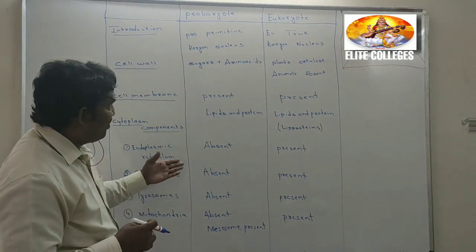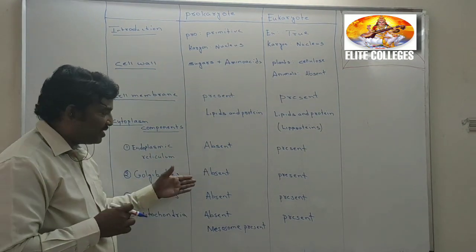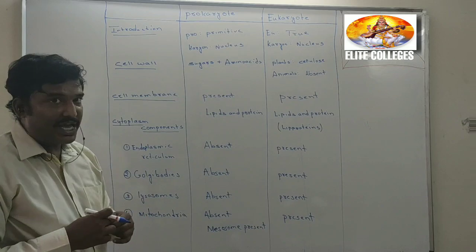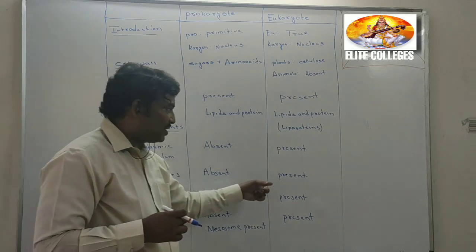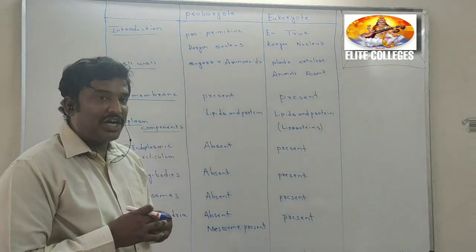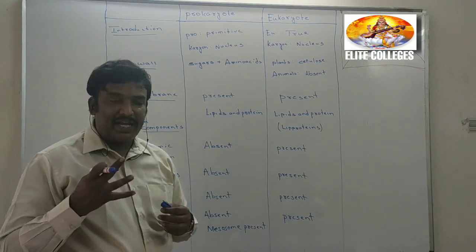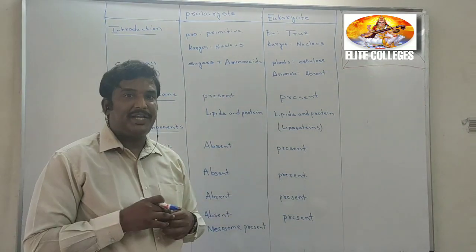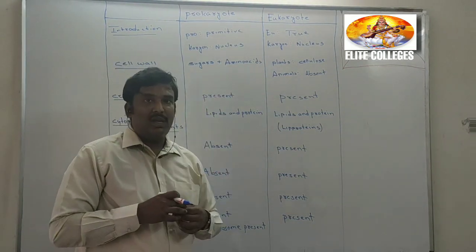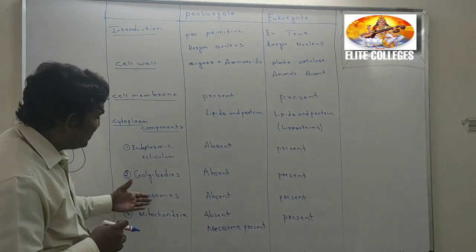Similarly, Golgi bodies are also absent in prokaryotes but are present in eukaryotes. The major function of the Golgi bodies is packaging of materials. So packaging of materials is the major function of the Golgi bodies in eukaryotes.